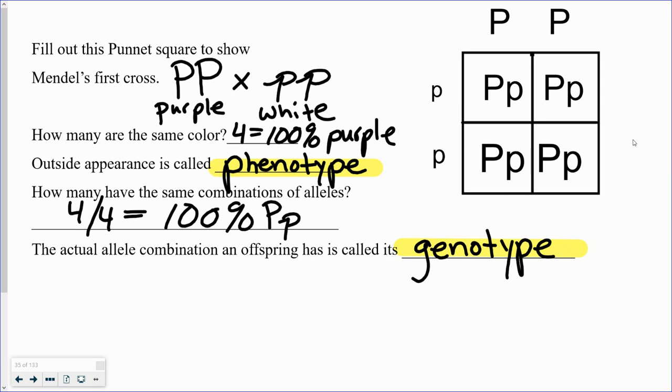In this particular cross, they all happen to come out capital P, lowercase p. So four out of the four offspring, or 100% of the offspring, have the exact same genotype.